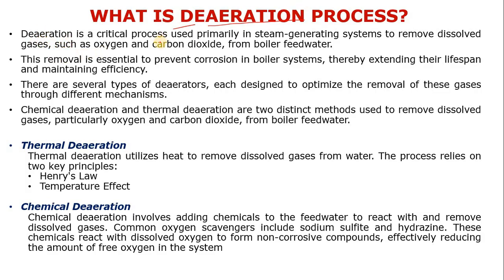De-aeration is a critical process primarily used in the steam generating system — it is part of the boiler package. We use the de-aeration process to remove dissolved gases, namely oxygen and carbon dioxide, from the boiler feed water. This removal is essential to prevent corrosion in the boiler system.